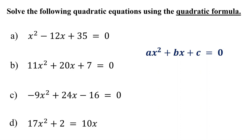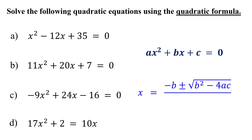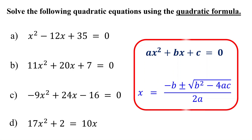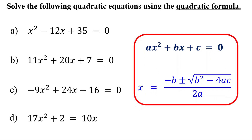For a quadratic equation in standard form, the quadratic formula is given by x equals negative b plus or minus the square root of b squared minus 4ac, all over 2a. Here, x represents the solutions, and a, b, and c are the coefficients of the quadratic equation.